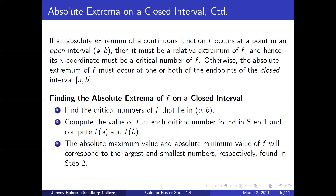Finding the absolute extremum of f on a closed interval: First, find the critical numbers of f that lie in the open interval (a, b). Second, compute the value of f at each critical number found in step one, and compute f(a) and f(b). Third, the absolute maximum value and absolute minimum value of f will correspond to the largest and smallest numbers, respectively, found in step two.